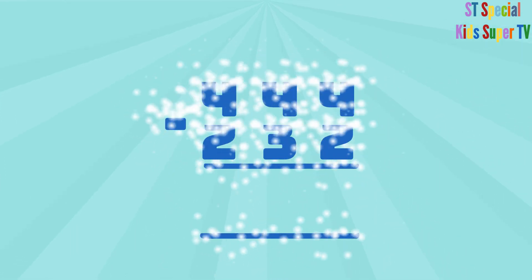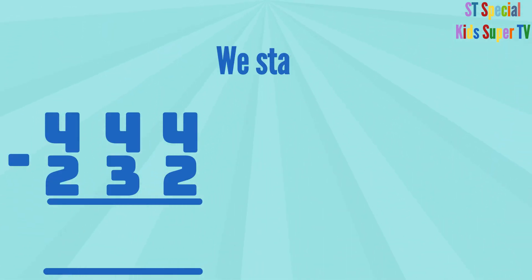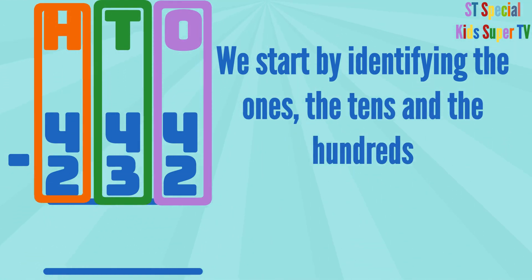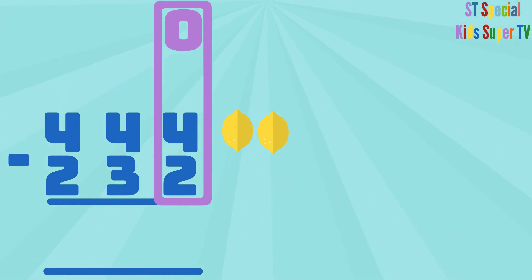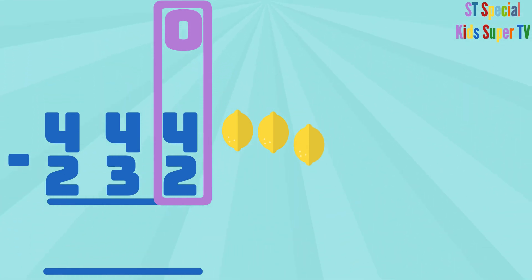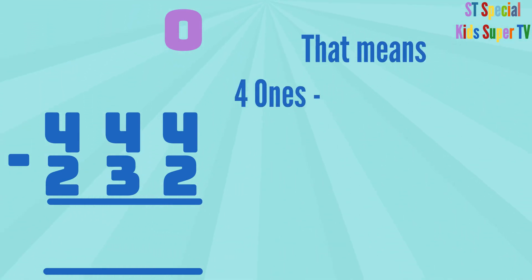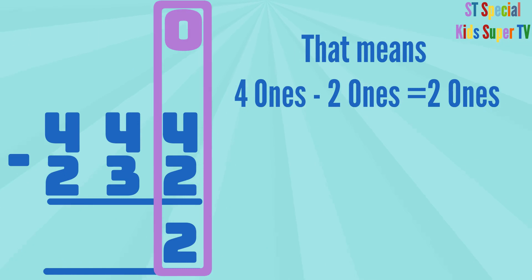Let's now calculate 444 minus 232. We start by identifying the ones, the tens and the hundreds. We then subtract the ones: 4 ones minus 2 ones. 1, 2, 3, 4 lemons minus 1, 2 lemons equals 1, 2 lemons. That means 4 ones minus 2 ones equals 2 ones. So we write the 2 under the ones column.